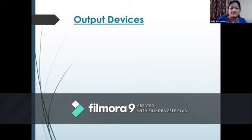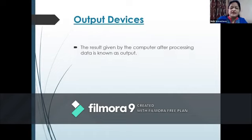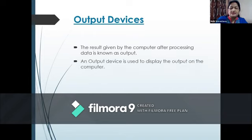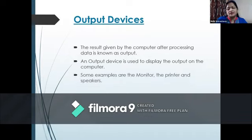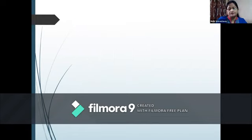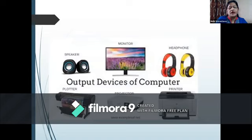Output devices. The result given by the computer after processing data is known as output. An output device is used to display the output on the computer. Some examples are the monitor, the printer and the speakers. These are the pictures of output devices — we can see speaker, monitor, headphone, plotter, projector and printer.